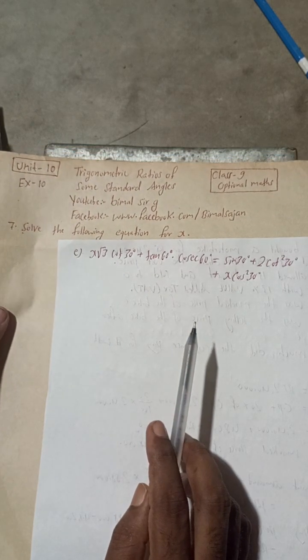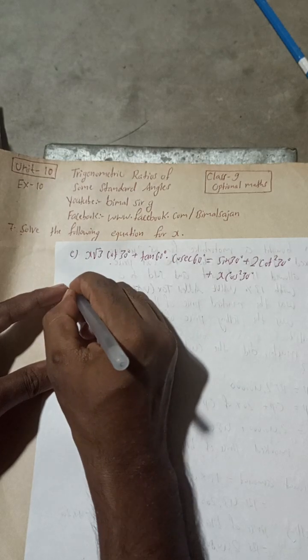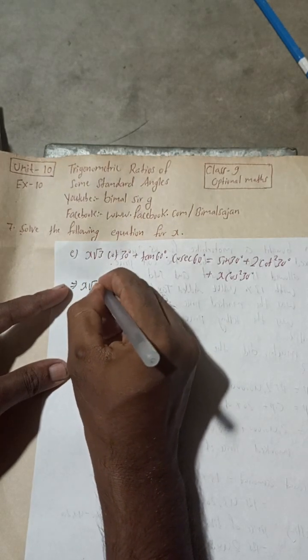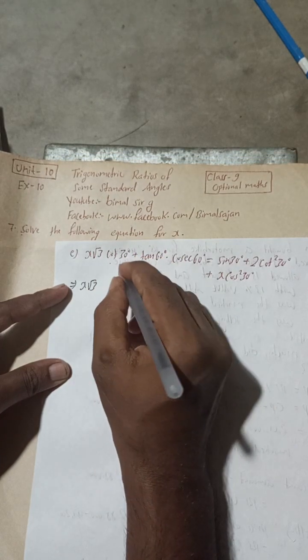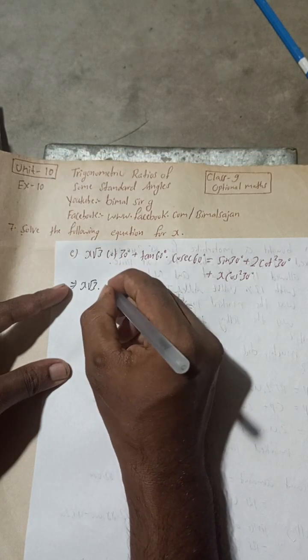Radhe Radhe, Jaya Sri Krishna. Now this is x√3, so x means x√3, and cot 30, so cot 30 value will be, tan 30 is 1 by √3, so cot 30 is √3.